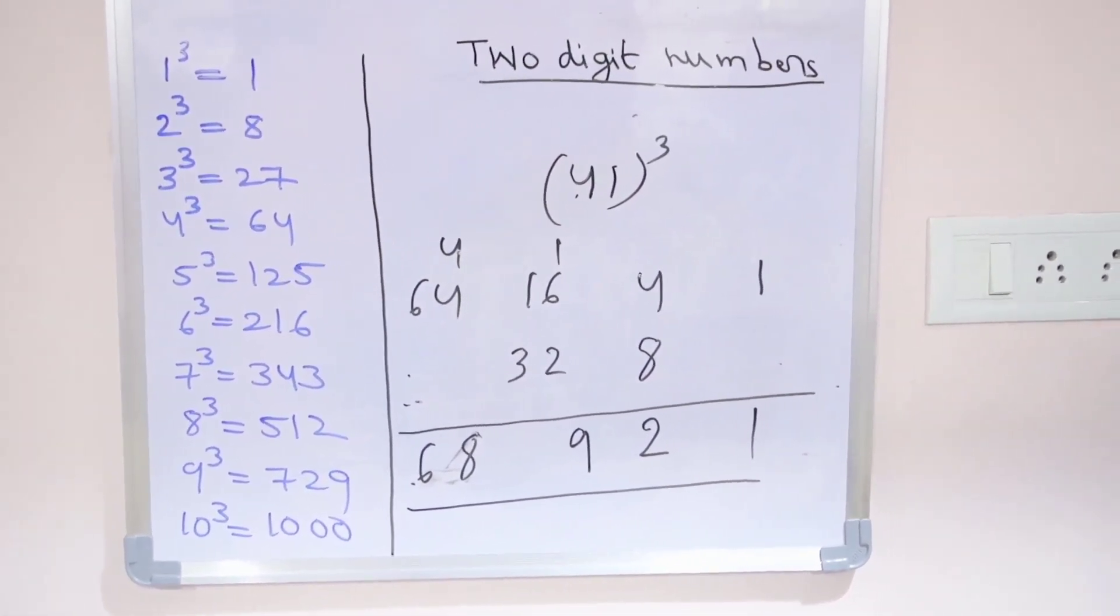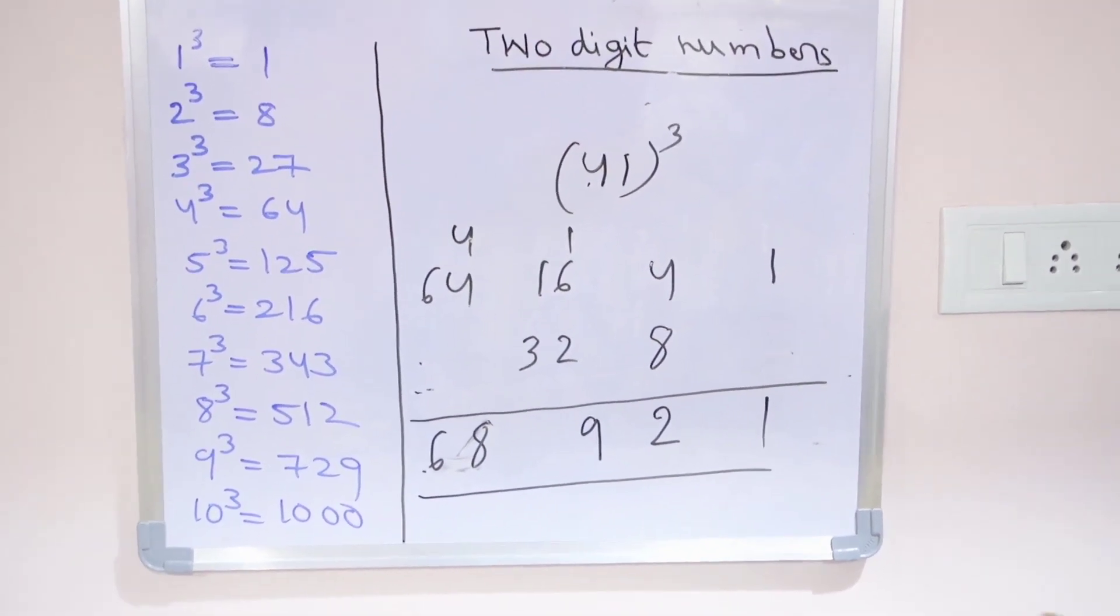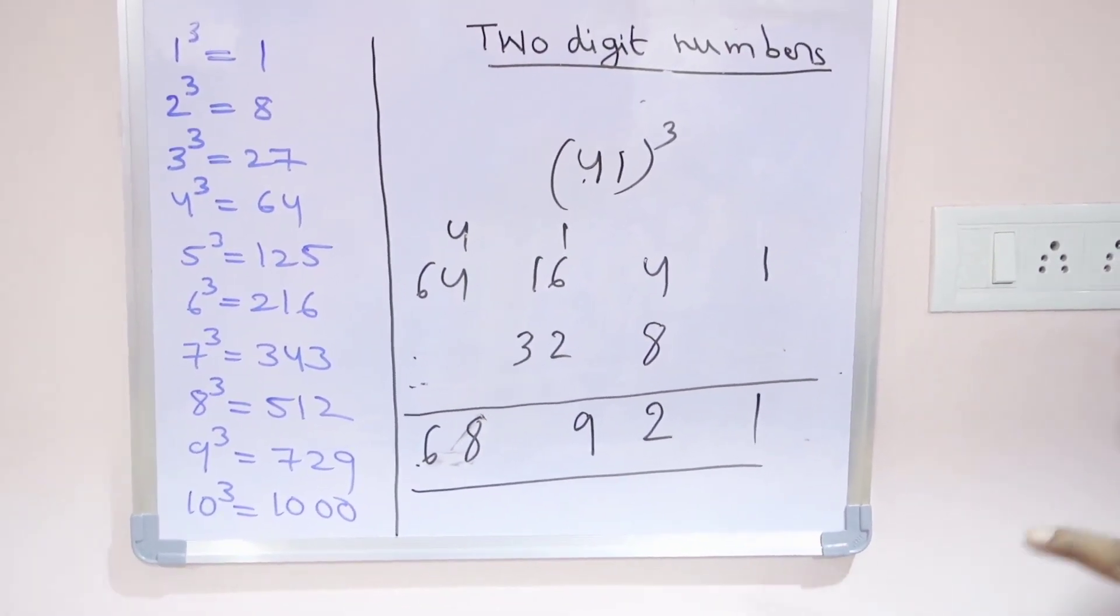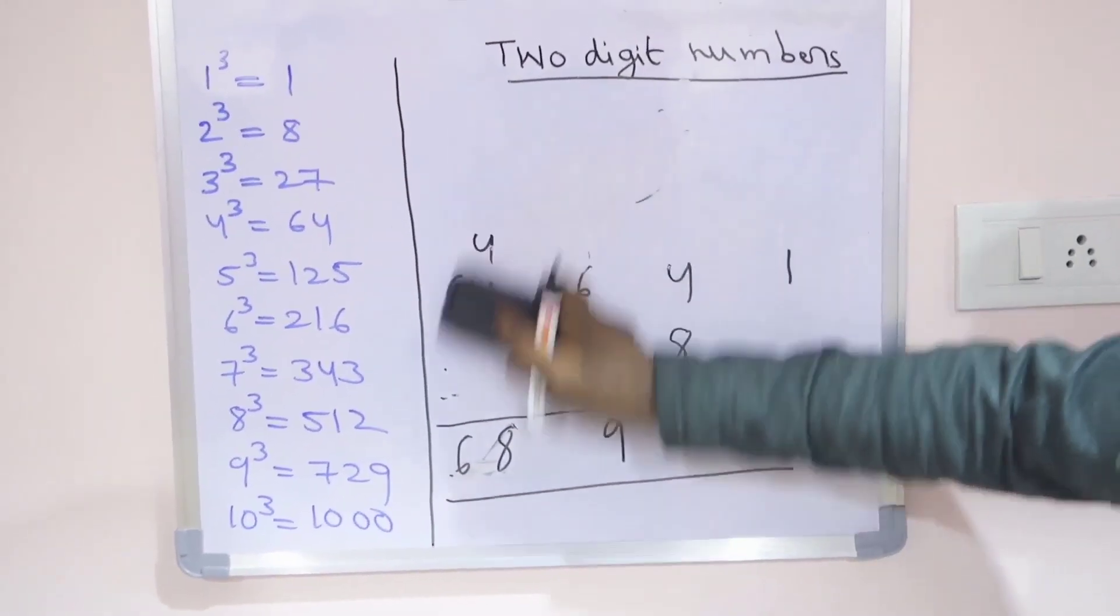Now, up to here we are seeing ending with 1, starting with 1. Now we go for same numbers, means 11 cube, 22 cube, 33 cube, 44 cube, 55 cube, like that. One question you will see.